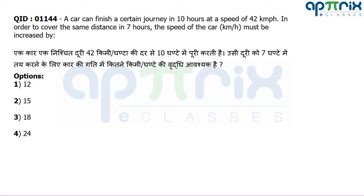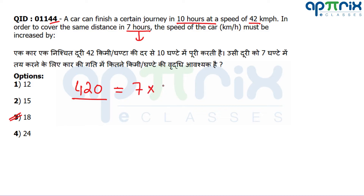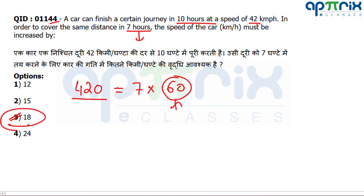Question number 1144: A car can finish a journey in 10 hours at 42 km/h. To cover the same distance in 7 hours, the speed must be increased by how much? Total distance is 420 km. To cover 420 km in 7 hours, you need a speed of 60 km/h. The increase required is 60 minus 42, which is 18 km/h. You can also use the AB rule — the link is in the description. Easy question.